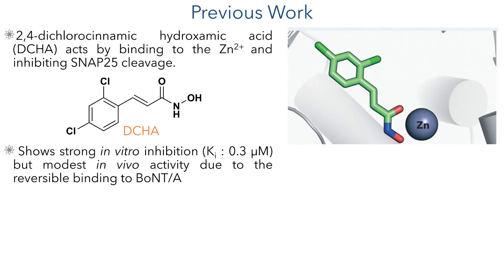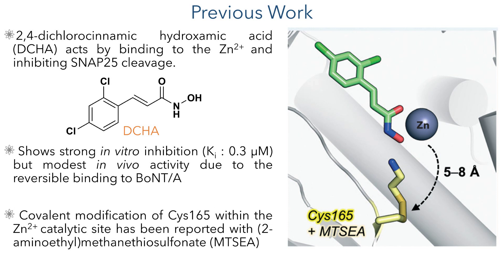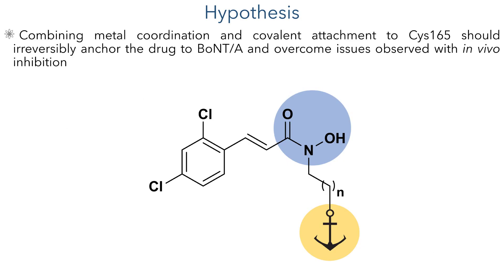In previous work, 2,4-dichlorocinnamic hydroxamic acid, or DCHA for short, was shown to inhibit the cleavage of SNAP25 by coordinating to the zinc atom and preventing it from catalyzing the hydrolysis of the protein. This showed very strong inhibition in vitro; however, in vivo studies showed only moderate activity due to reversible binding to BoNT-A. Other studies showed that cysteine-165 can be covalently modified using 2-aminoethyl methane thiosulfonate, leading to the hypothesis that these two effects could be combined — using metal coordination to deliver an electrophilic warhead to cysteine-165 to covalently and permanently attach the molecule to the protein.